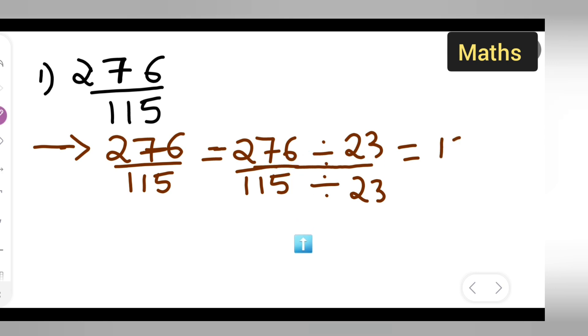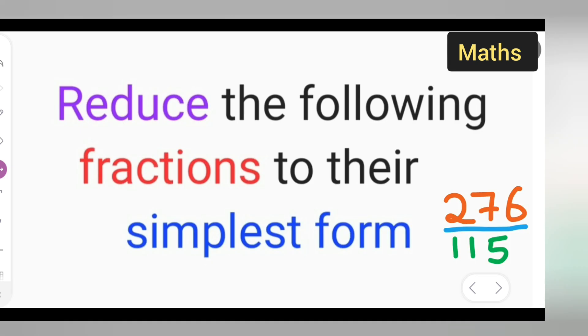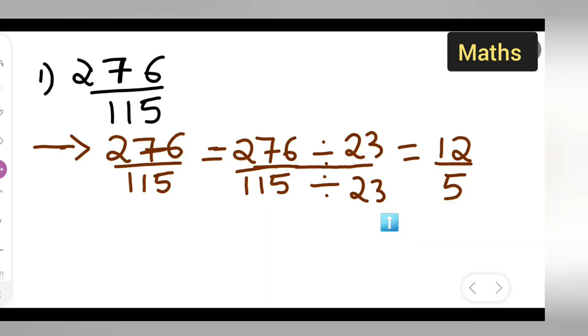Because 23 times 1 is 23, 23 times 5 is 115. So I hope you have understood how to reduce the following fraction to their simplest form. This is the way.